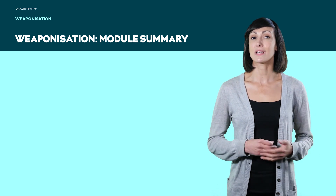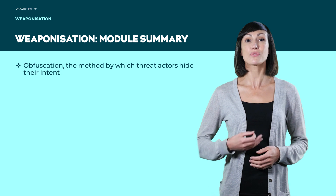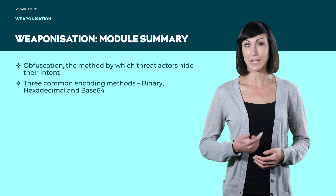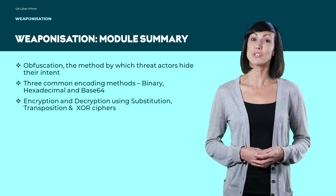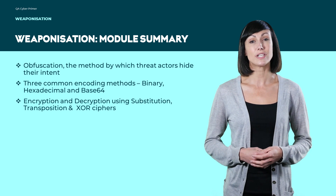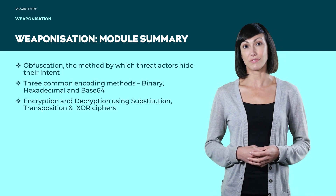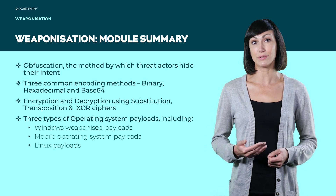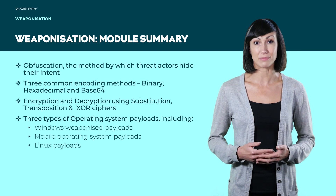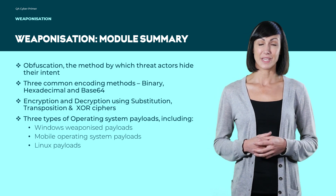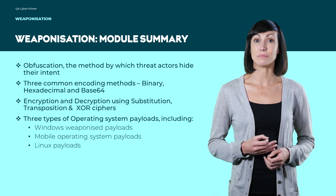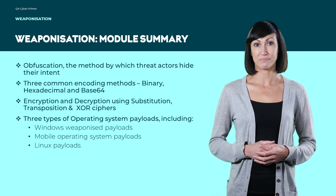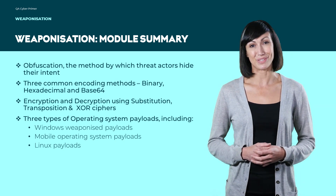This module has covered obfuscation — the method by which threat actors hide their intent — three common encoding methods: binary, hexadecimal, and base64, encryption and decryption using substitution, transposition, and XOR ciphers, and three types of operating system payloads including Windows weaponized payloads, mobile operating system payloads, and Linux payloads. You'll now have the opportunity to use a system known as the Metasploit framework, which can assist in weaponization. Watch the simulation videos and then have a go at them yourself.